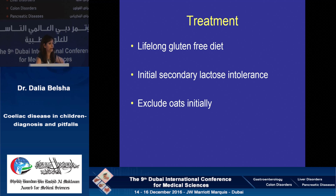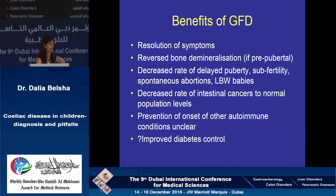Treatment, until now, is only lifelong gluten-free diet. Think about lactose intolerance in children — lots of our kids with MARSH 3C criteria also have lactose intolerance, and we do sometimes put them on a lactose-free diet if villi are severely atrophied. We counsel our patients on the benefits of a gluten-free diet even if asymptomatic, including improvement of bone demineralization, reduction of delayed puberty, reduction of recurrent miscarriages and low birth weight, reduction of bowel cancers by 8% for small bowel cancers and four times for colonic cancers, and prevention of onset of other autoimmune diseases.